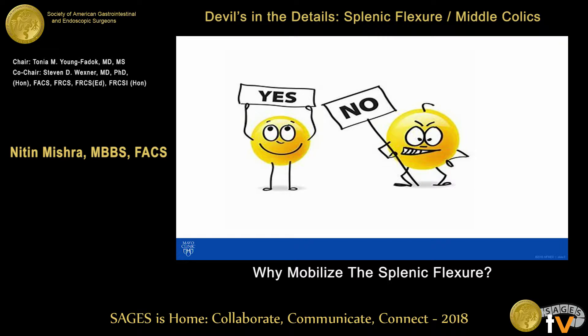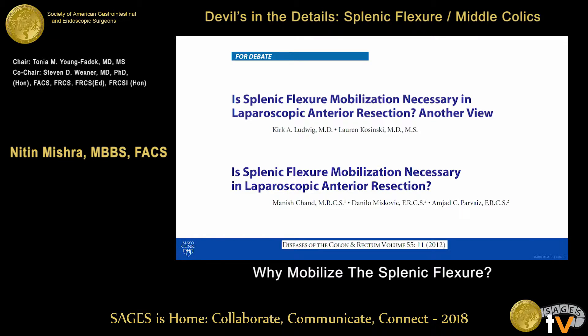There are two groups of surgeons: those who mobilize and those who don't. It seems like those who mobilize are the happier group — I don't know if you can tell what my bias is. This is an ongoing conflict, an ongoing debate. The DCR decided to have two groups fight it out in the public domain.